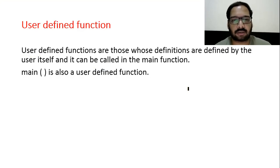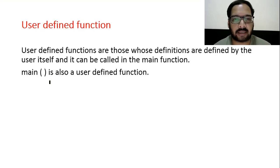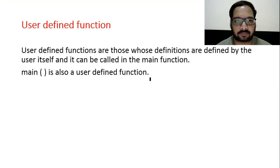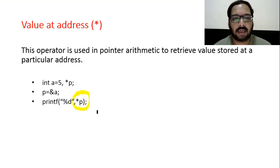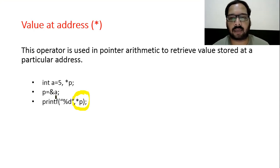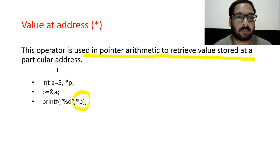User-defined functions are those whose definitions are defined by the user itself and can be called in the main function. Main is also a user-defined function. Value at address: in pointers we use the asterisk (*) operator, which identifies the value stored at the address contained in a pointer. This operator is used in pointer arithmetic to retrieve the value stored at a particular address.